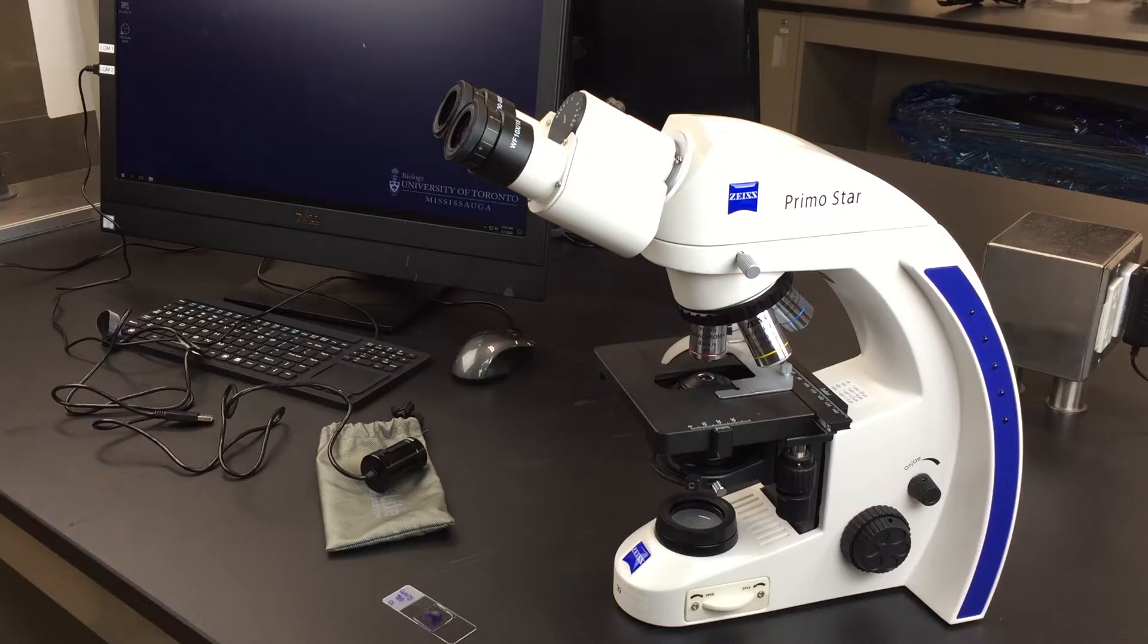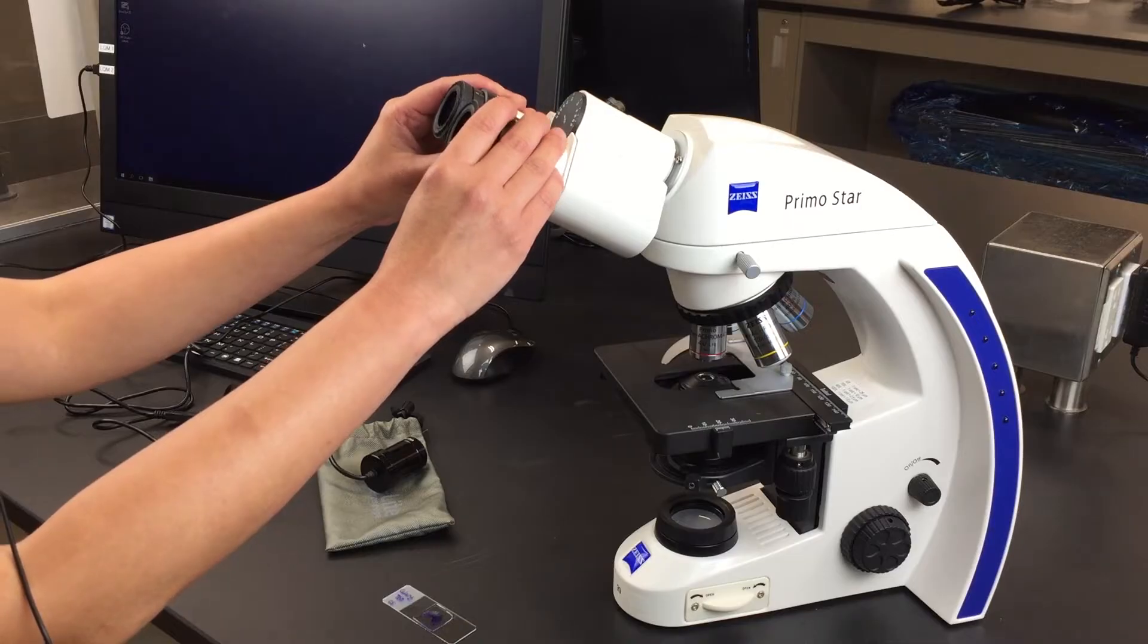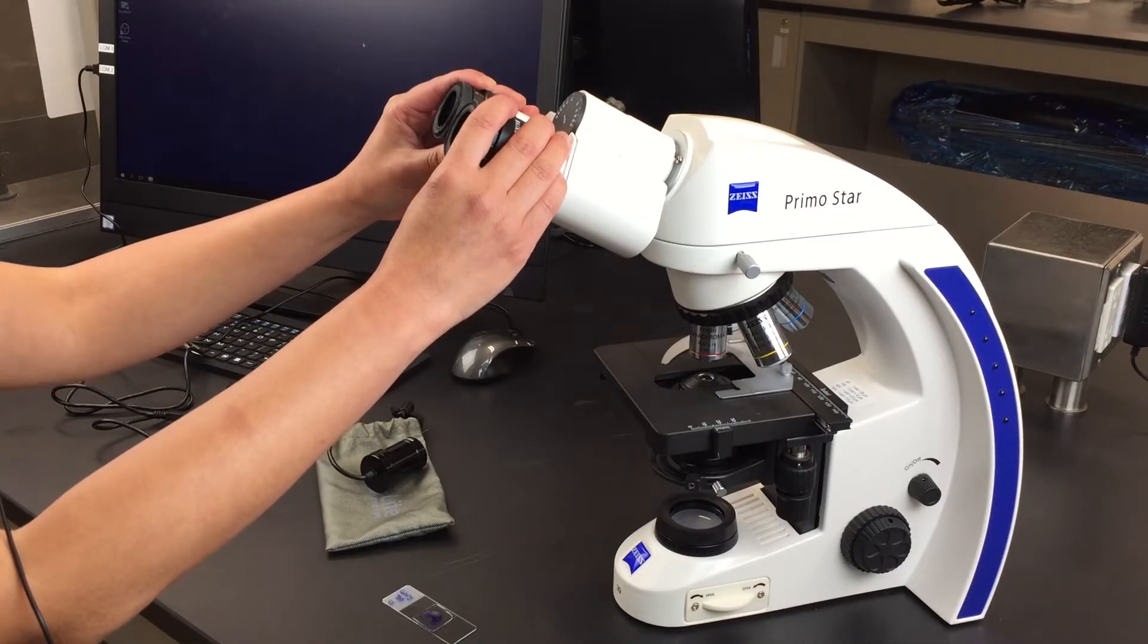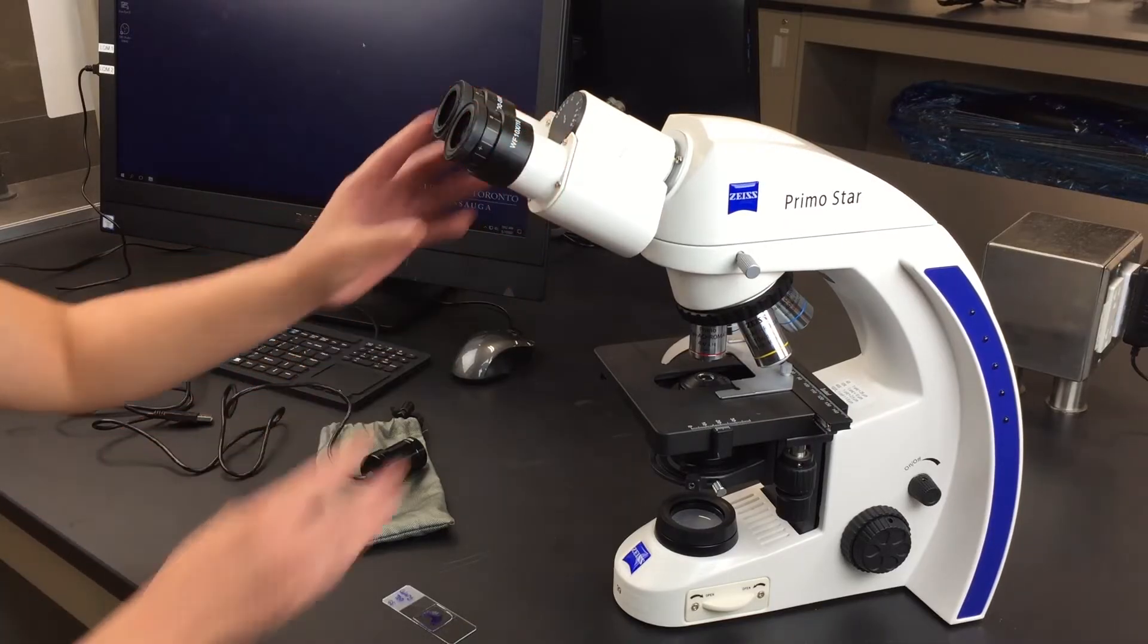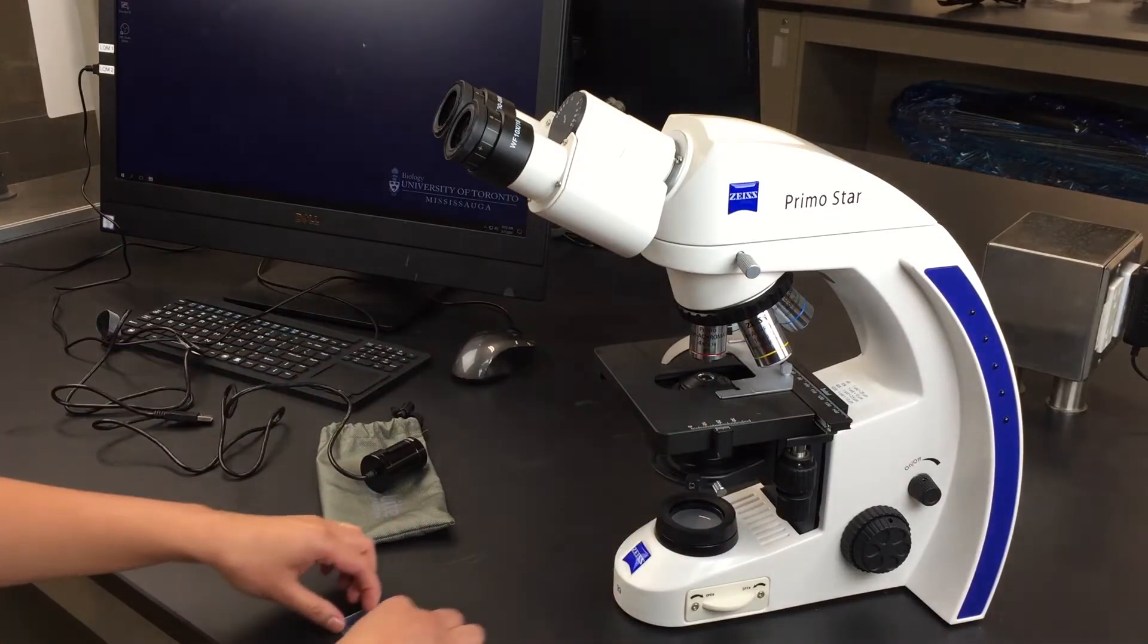With the Zeiss compound microscope, the main parts include the ocular or eyepieces, where you put your eyes to look under the microscope, and the stage where you put your specimens.